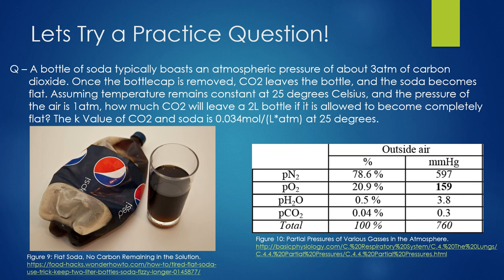Now that we have covered the theory behind the Henry's Law equation, let's try putting it into practice. A bottle of soda typically boasts an atmospheric pressure of about 3 atmospheres of carbon dioxide. Once the bottle cap is removed, CO2 leaves the bottle and the soda becomes flat. Assuming temperature remains constant at 25 degrees Celsius and the pressure of the air is 1 atm, how much CO2 would leave a 2 liter bottle if it is allowed to become completely flat? The k value for CO2 is 0.034 moles per liter. Please take the time to pause the video and try it for yourself.